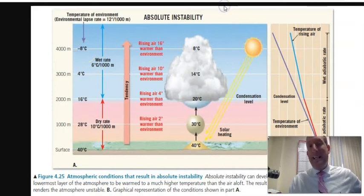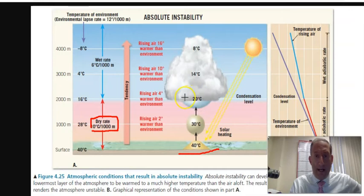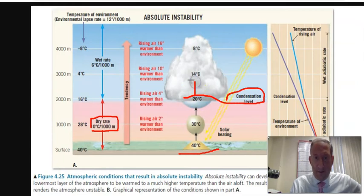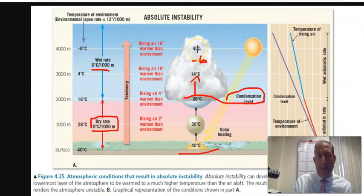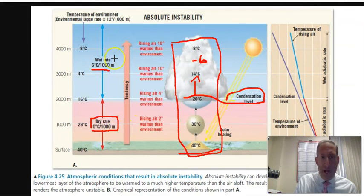For the air parcel column, start with the surface temperature of 40°C. While the air is dry — below the condensation level at 2,000 m — subtract 10 per 1,000 m: 40 to 30, then 30 to 20. Above the condensation level, the wet rate applies at 6°C per 1,000 m: 20 to 14, then 14 to 8. Those are determined by the surface temperature, condensation level, and the dry and wet lapse rates.